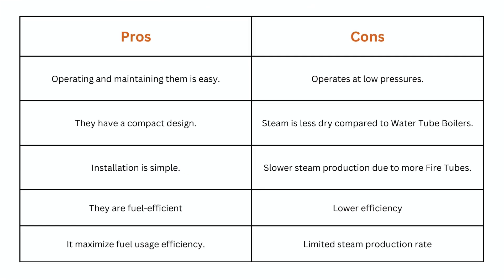The main advantages and disadvantages of smoke tube boilers include easy maintenance, simple installation, low efficiency, limited steam production rate, and much more.